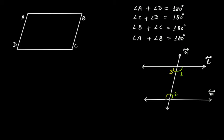Angle 1 and angle 2 form one pair of internal angles on the same side of the transversal, and angle 3 and angle 4 form another such pair. By the property of two parallel lines with a transversal, the sum of co-interior angles is supplementary: angle 1 plus angle 2 equals 180 degrees, and angle 3 plus angle 4 equals 180 degrees.